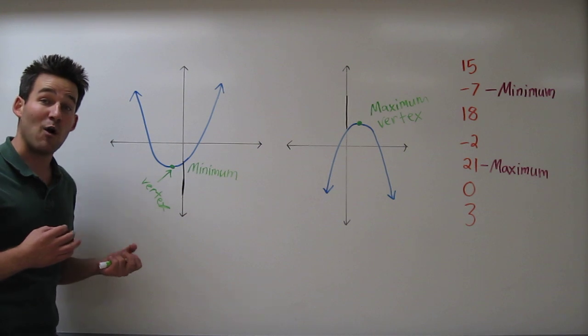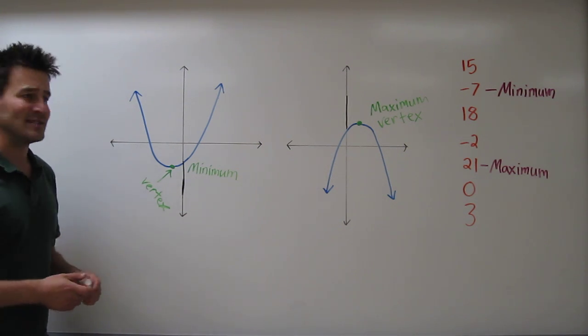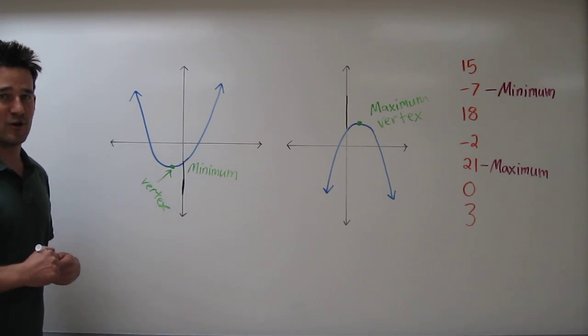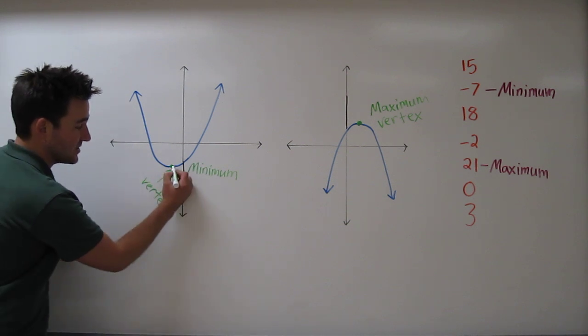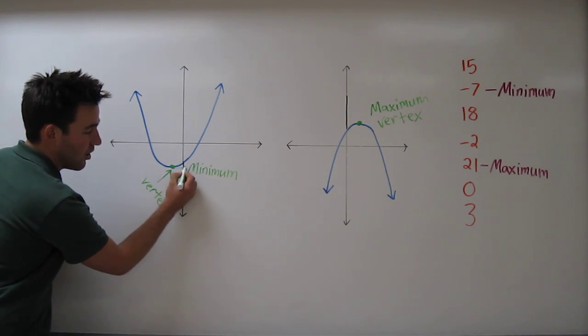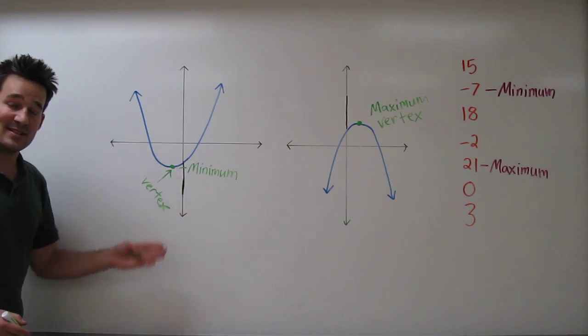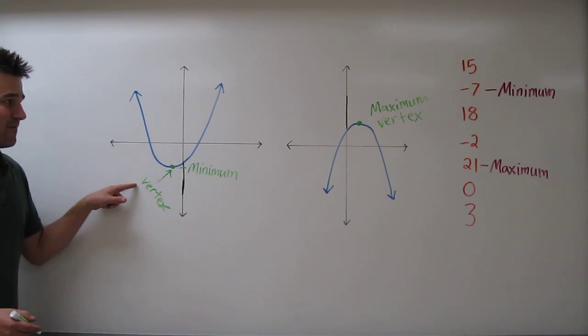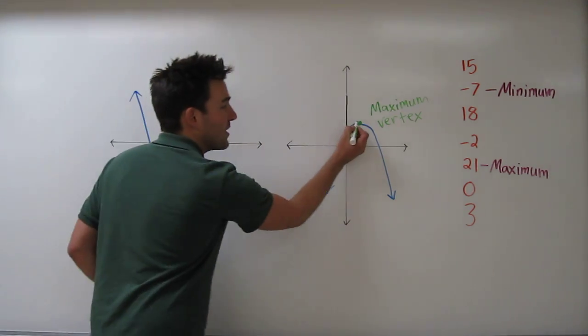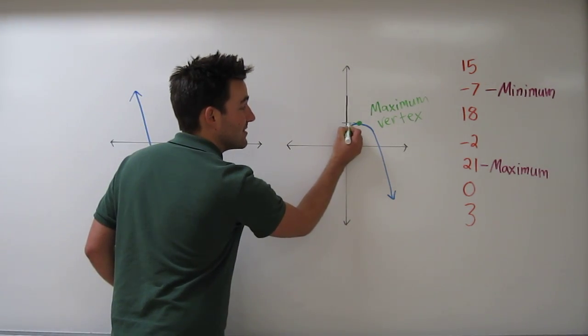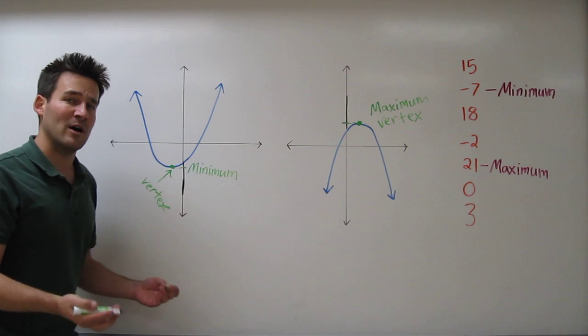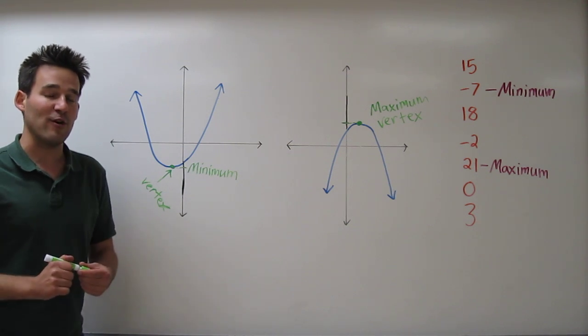Well, if we were going to try to find out what that actual value was, instead of just pointing to it on the graph, we would actually go to the vertex and draw a line over to the y-axis. Whatever value this is on the y-axis would actually be the minimum value. Over here, whatever value this lined up with on the y-axis would actually be the maximum value of the function.